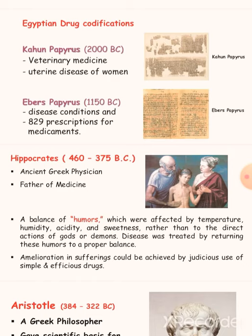Egyptian drug codifications contain two types: the Kahun Papyrus and the Ebers Papyrus. The Kahun Papyrus contains veterinary medicines and uterine diseases of women. The Ebers Papyrus contains disease conditions and 829 prescriptions for medicaments.